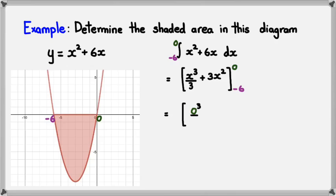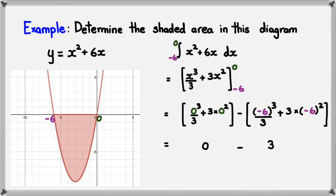Calculating on, we have 0 cubed over 3 plus 3 times 0 squared minus negative 6 cubed divided by 3 plus 3 times negative 6 squared. Simplifying this, I should get 0 minus 36. So, the final answer would be negative 36.